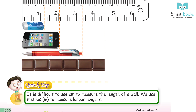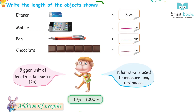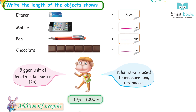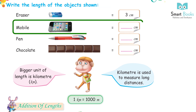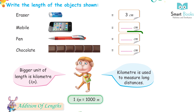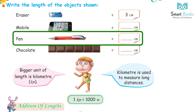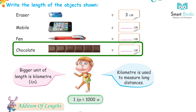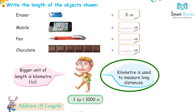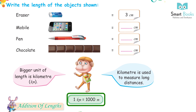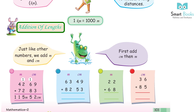Quick tip: It is difficult to use centimeters to measure the length of a wall. We use meters to measure long lengths. Write the length of the objects shown: Eraser – 3 cm, Mobile – 5 cm, Pen – 8 cm, Chocolate – 11 cm. Bigger unit of length is kilometer.